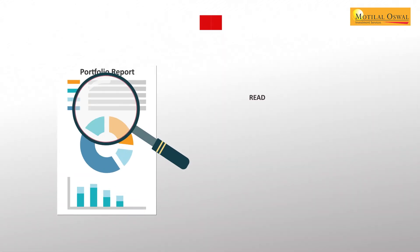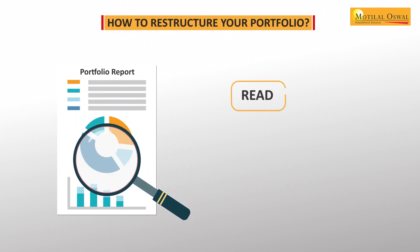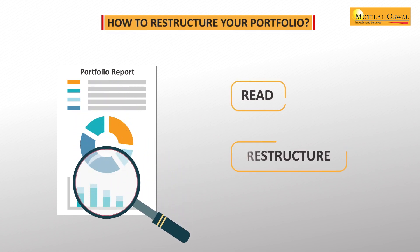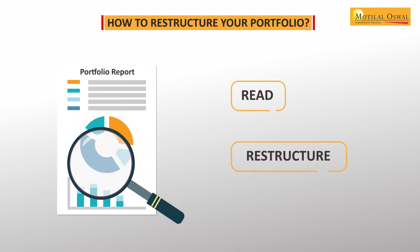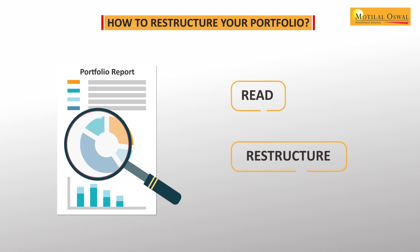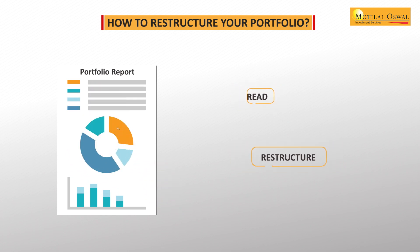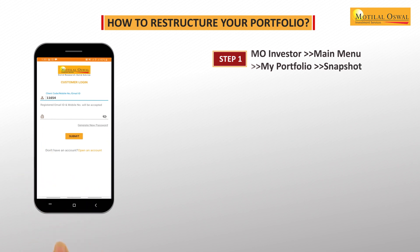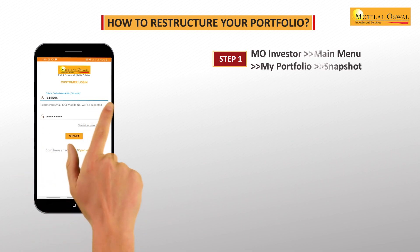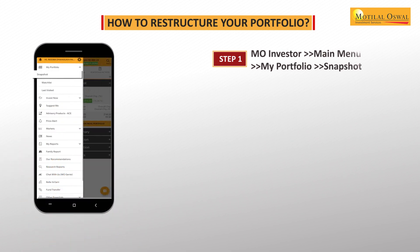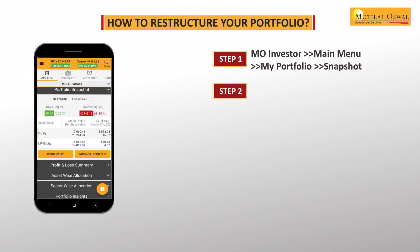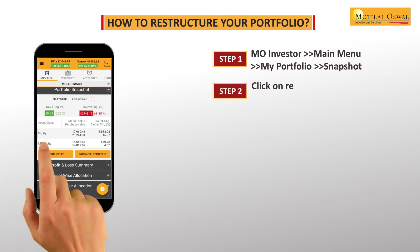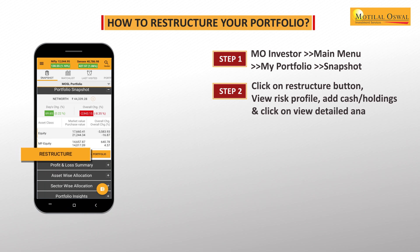Now let's begin with how to read your portfolio report and restructure your portfolio. This can be done with a few simple steps. Step 1: Login to MO Investor app or web and select snapshot under My Portfolio from the menu. Step 2: Click on the restructure button.